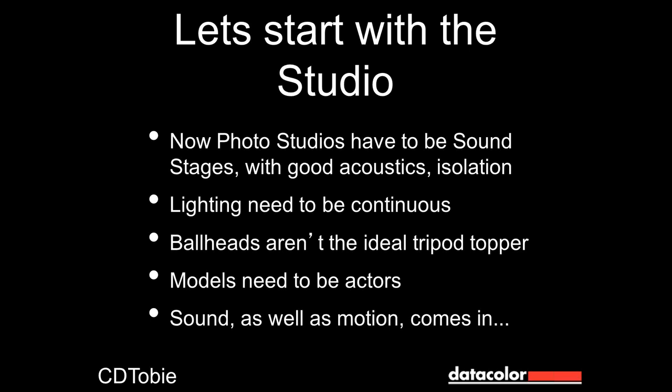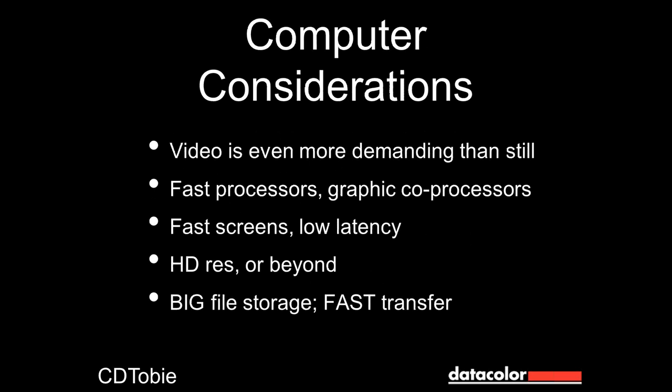With motion comes sound, and with sound comes music. For computer considerations, if you were buying a new computer today, many options would be great for Photoshop and image editing, but for video you want the fastest processors, the best graphics co-processors, and the biggest internal hard drives. Something most of us aren't familiar with is the idea of a fast screen — it has to do with latency and how quickly pixels change, which doesn't matter in Photoshop but matters a great deal at 30 frames per second.